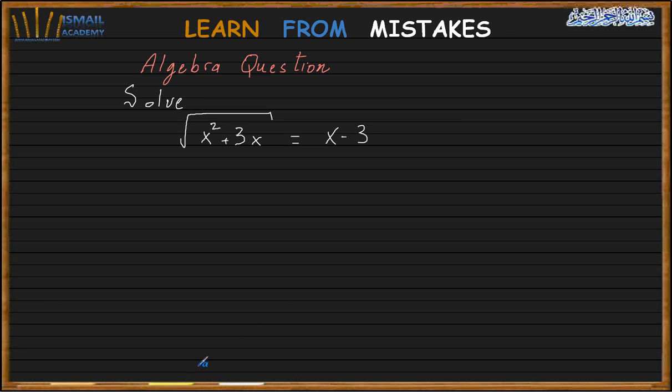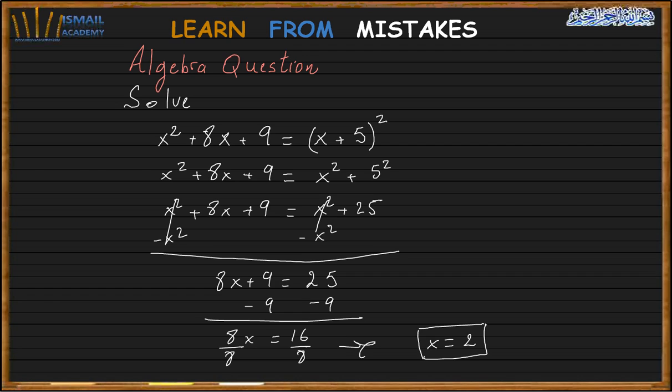But first let's show the mistake made on the previous question. So the previous question was x squared plus 8x plus 9 equals x plus 5 squared.